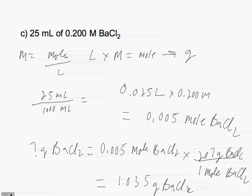Take 1.035 grams of barium chloride, use a volumetric flask, and raise the volume to the 25 milliliter mark to obtain a 0.200 molar solution of barium chloride. That's a wrap.